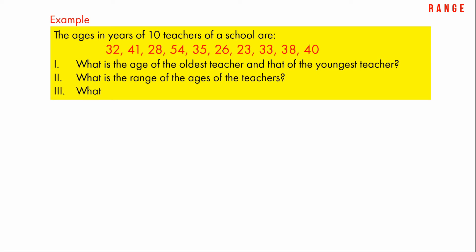So in this problem, at first we arrange the ages in ascending order: 23, 26, 28, 32, 33, 35, 38, 40, 41, 54.